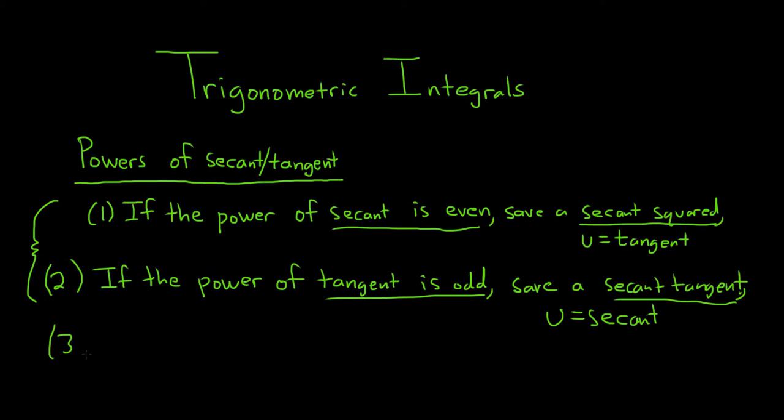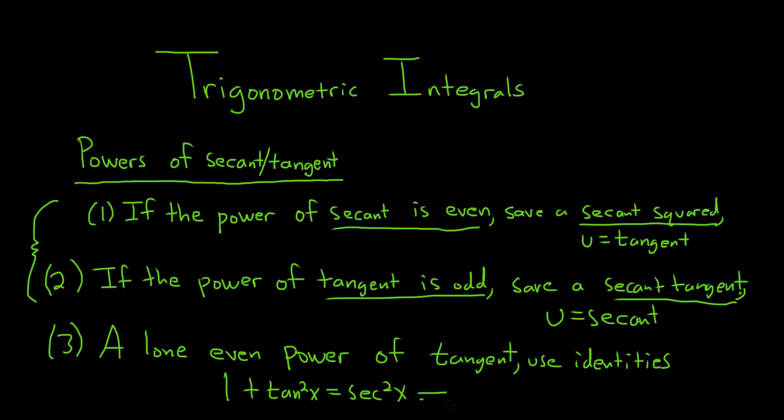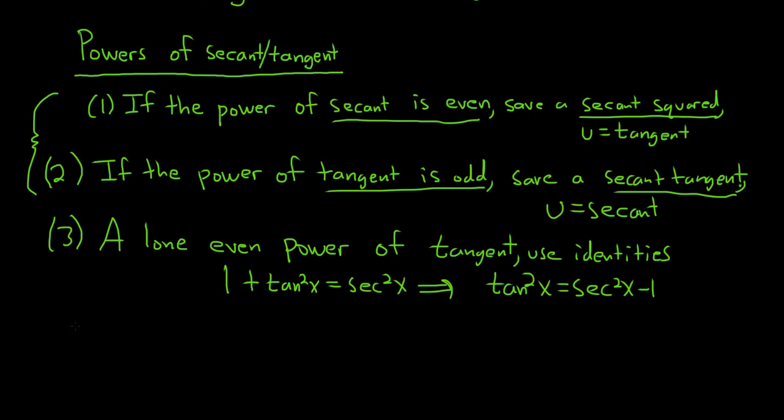There's two more cases which are more challenging. If you have a lone even power of tangent, like tangent squared or tangent to the fourth, and no secants, use identities. The identity you want to use is 1 plus tan squared equals secant squared, so tan squared equals secant squared minus 1. Rewrite it and just keep going.